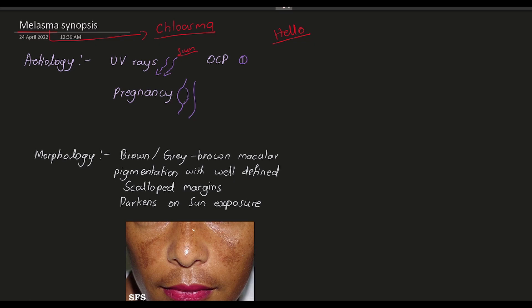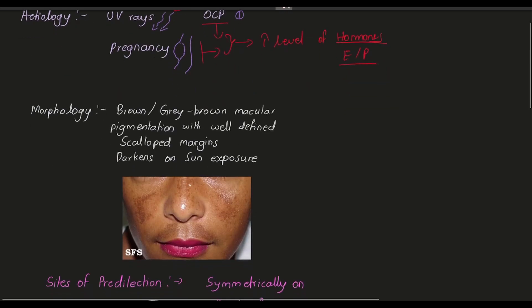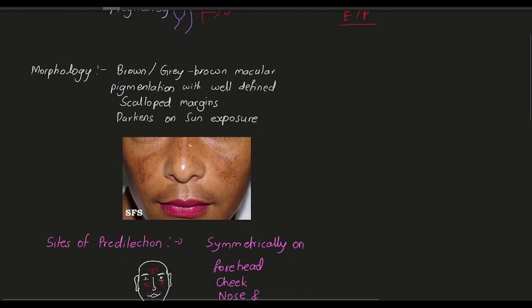It can also be caused by oral contraceptive pills and pregnancy. In both of these, there is an increased level of hormones, for example estrogen and progesterone. How does melasma look?